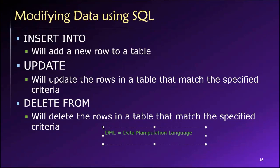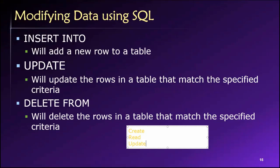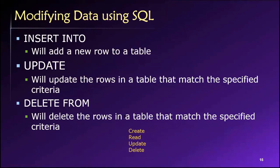There are four basic data operations that are handled by the data manipulation language. They are: creating new data, reading existing data — like getting values out of the database — updating existing data, or deleting existing data. These are our four basic data operations, and the reason I listed them like this is because it creates the acronym CRUD, which is reasonably easy to remember: create, read, update, and delete.